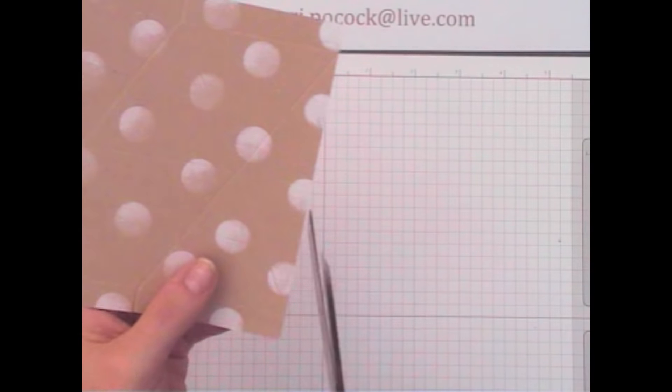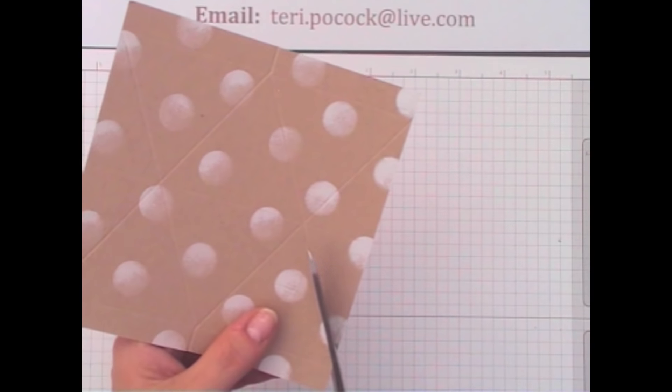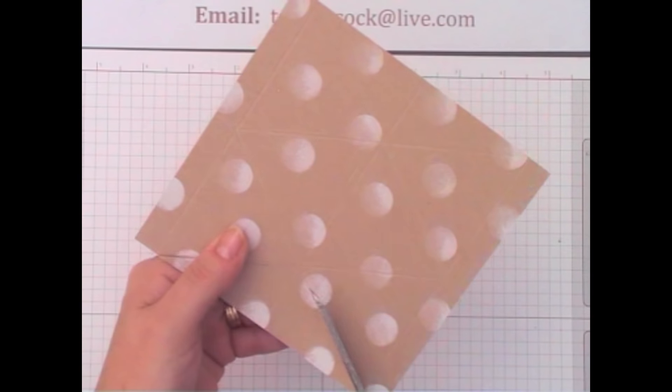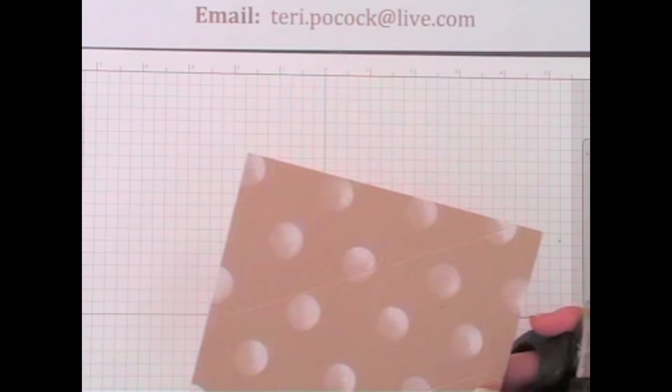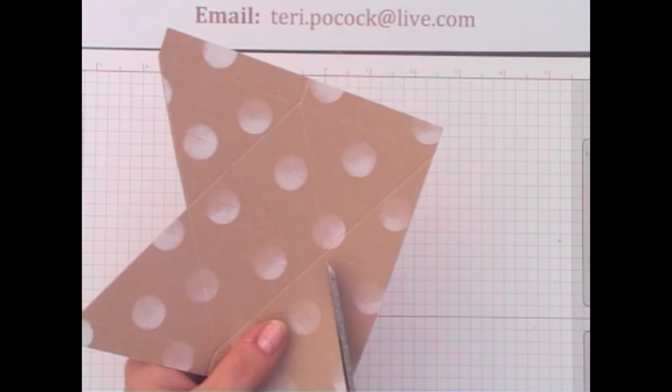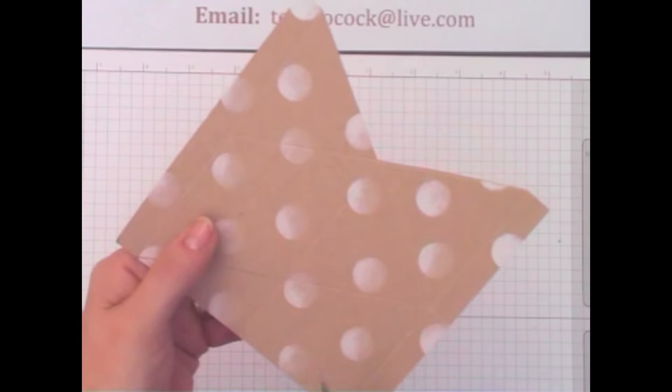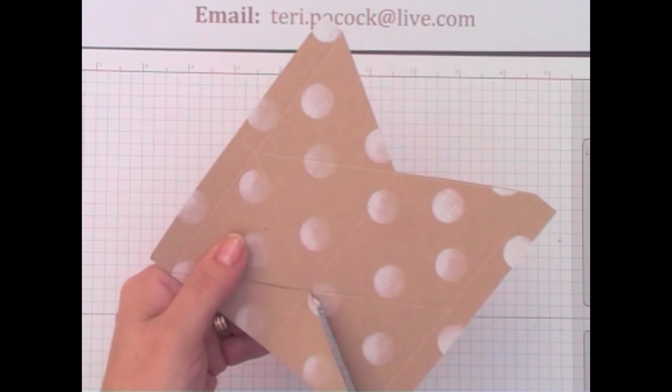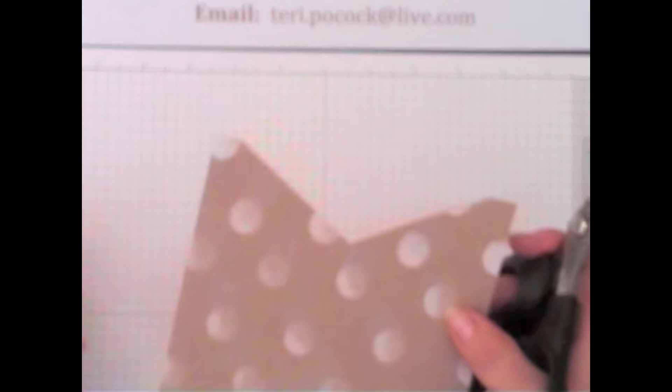If you take your scissors and just cut along the score lines to remove those sections. There we go.